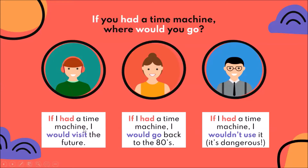The third person says: if I had a time machine, I wouldn't use it — it's dangerous. So once again they all start with the same sentence: if I had a time machine. He says he would go to the future, she would go to the past — specifically to the 80s — and he wouldn't use it. Here we have 'would' and 'wouldn't' because this last one is in the negative: would not use it.